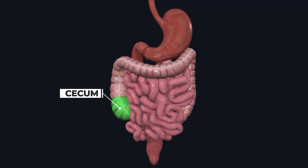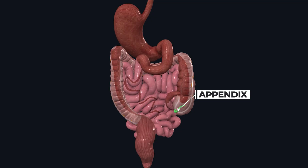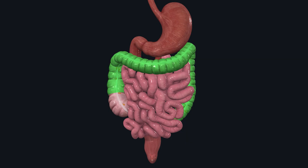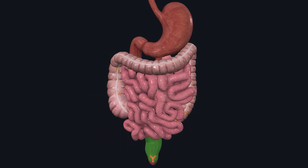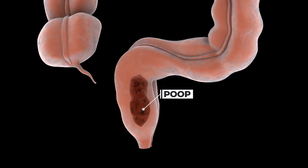The first part of the large intestine is called the cecum, where the appendix is also located. The appendix contains beneficial bacteria. After the cecum, the second part of the large intestine, called the colon, begins. It is a large section, which is why the large intestine is sometimes referred to as the colon. The last straight portion is called the rectum, where waste material is stored before being expelled from the body through the anus.